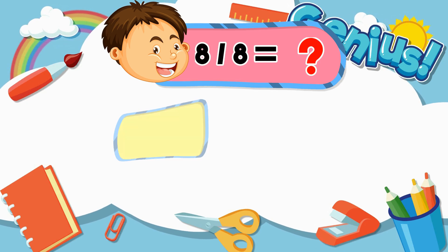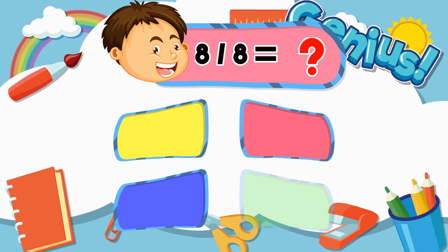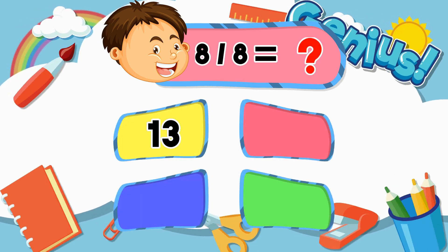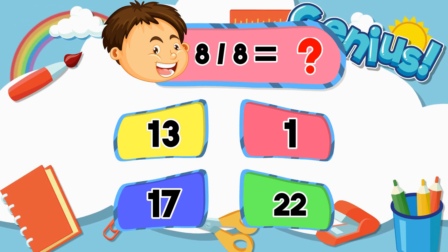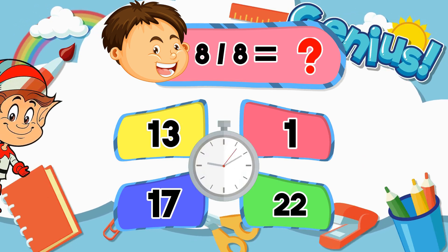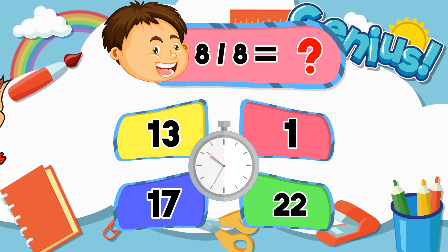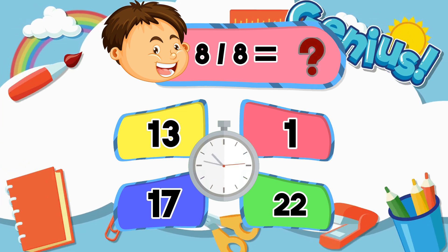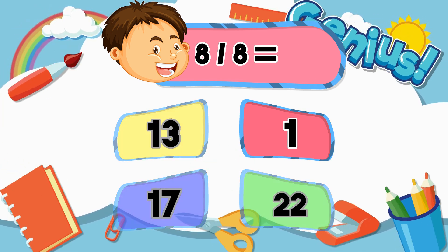What is 8 divided by 8? 13. 1. 17. 22. Correct answer: 1.